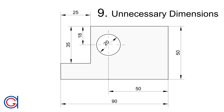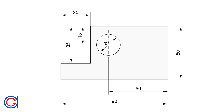Rule 9: You should never put more dimensions than necessary in a drawing, because if there is one error it will get compounded with too many dimensions. As you can see, the red dimensions in the drawing are unnecessary, as we can work out these dimensions without writing them by subtracting the others — for example, 35 minus 18 is 17, so we don't need the 17.